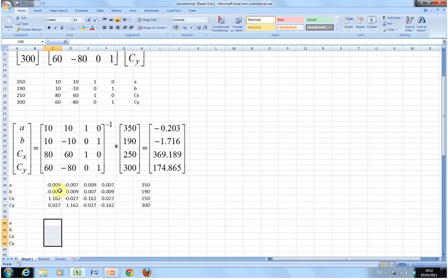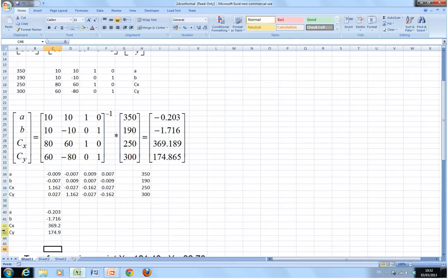Now, I want to work out what the 4 parameters are. That's that matrix by that matrix. That's a 4x4, that's a 4x1, and a 4x4 by a 4x1 is multipliable in matrix terms, and the result is a 4x1. I have the 4x1 here. I say, equal, M-M-U-L-T, comma, close bracket, finger on Ctrl, finger on Shift, finger on Enter. So, s cos alpha is minus 0.203, s sin alpha is minus 1.716, and the translation for the X and the translation for the Y is 369 and 174.9.